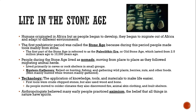Technology was also starting to be developed during this time. Technology isn't just your iPhone or any electronic device, but rather the application of knowledge, tools, and materials used to make life easier. The first tools were crude chipped stones used for sawing, as well as wood and bone. As people started moving to colder climates, they also discovered fire, animal skin clothing, and how to build shelters.